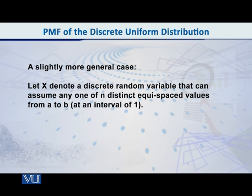Now I would like to present to you a slightly more general case. Consider the following. Let x denote a discrete random variable that can assume any one of n distinct equi-spaced values from a to b.